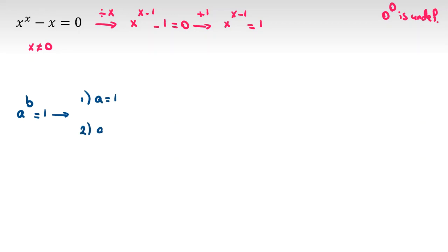Second case, a equal to negative one and b is an even integer, b equal to two c where c is an integer. Third one, b equal to zero, the power is zero, but the base shouldn't be zero because zero to the zero is undefined.